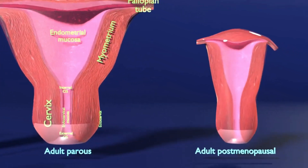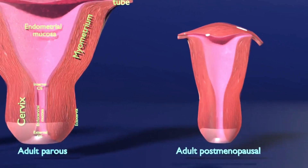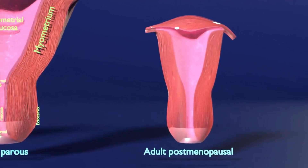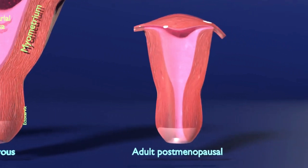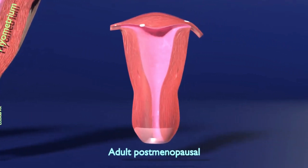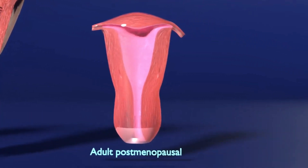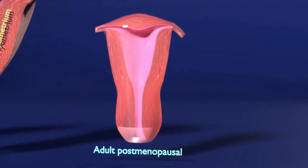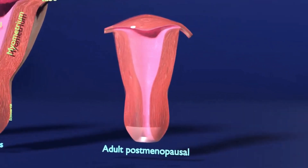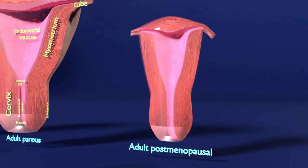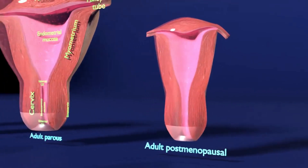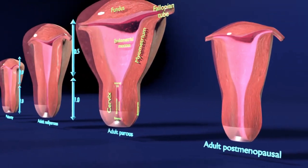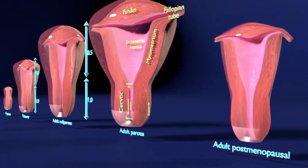In this view, the adult postmenopausal uterus can be seen. The postmenopausal uterus appears small and atrophic, reflecting the lack of hormonal stimulation and absent menstrual activity. The fundus is smaller than the cervix, and the cervix-to-fundus ratio is 2:1.